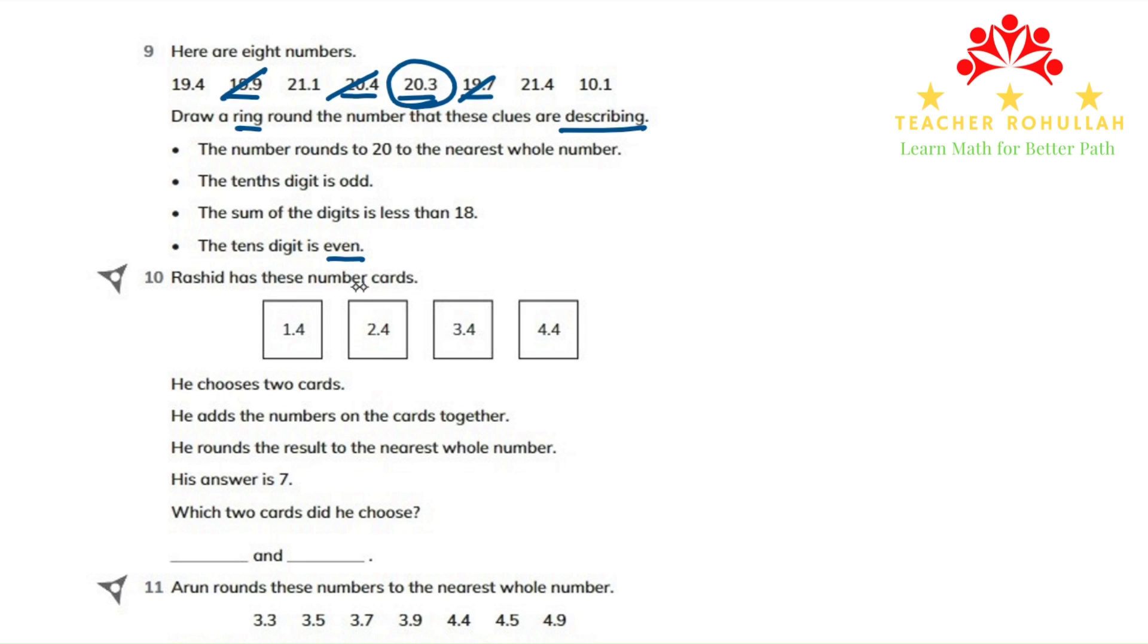Here it says Rashid has these number cards. And the number cards are 1.4, 2.4, 3.4, and 4.4.